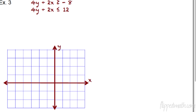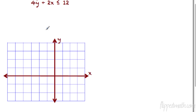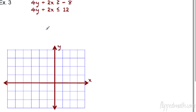Example 3. We have 4y plus 2x is greater than or equal to negative 8, and 4y plus 2x is less than or equal to 12. You can see some similarities here. Pause the video and solve each for y, and then we'll graph them after you solve it. Ready? Pause the video. Go.